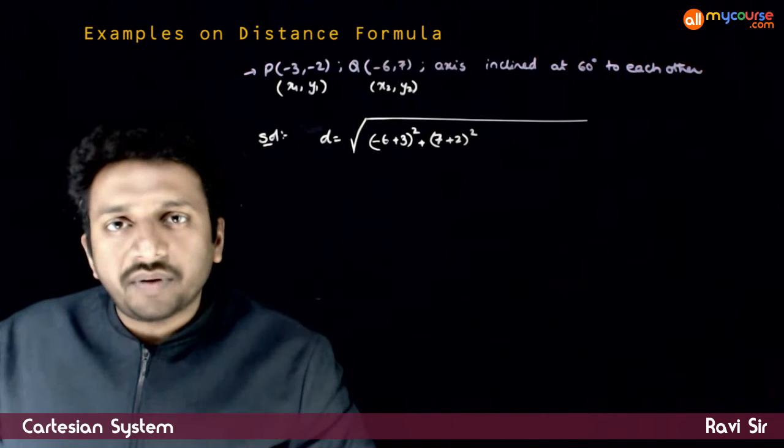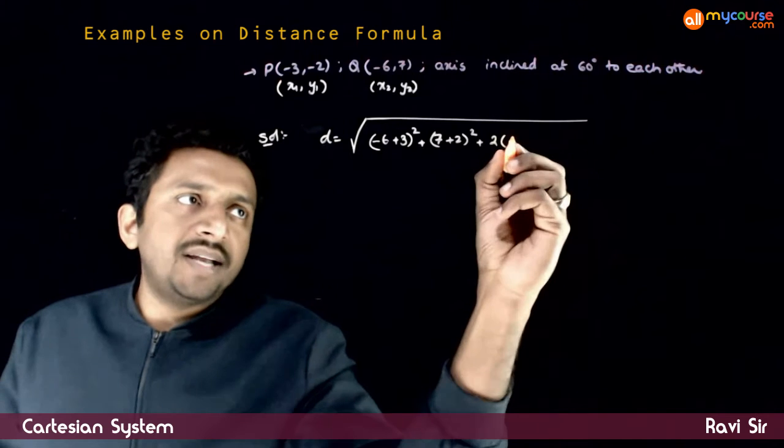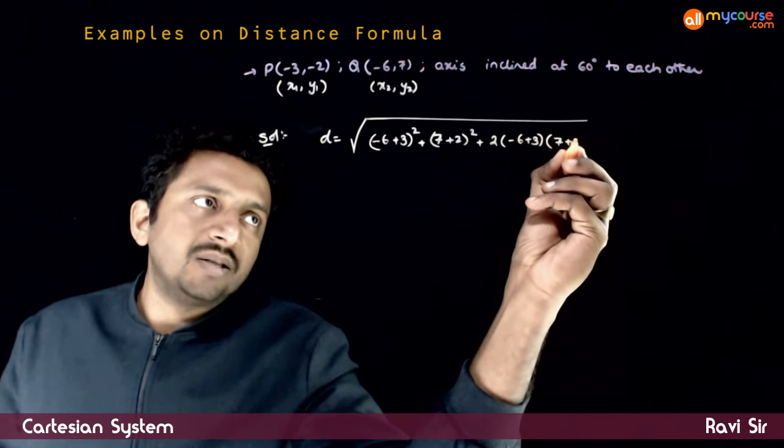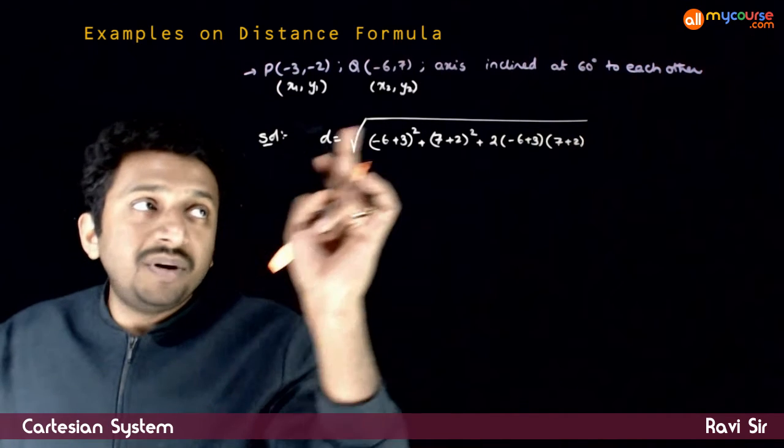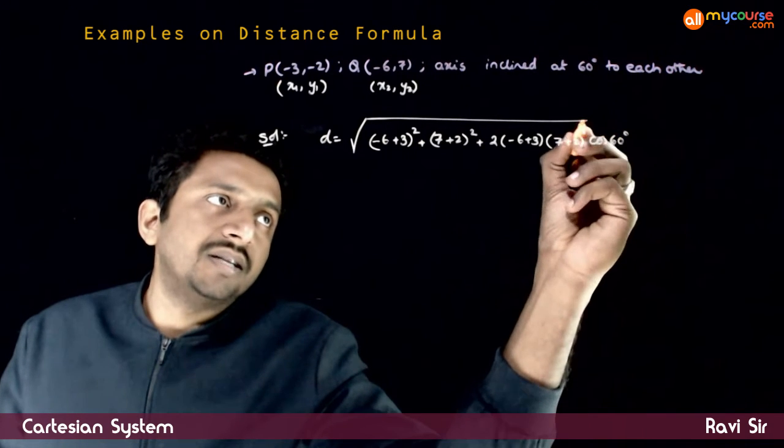...plus 2 times (x1 minus x2) times (y1 minus y2) times cos of angle between the axes. This is cos of 60 degrees.